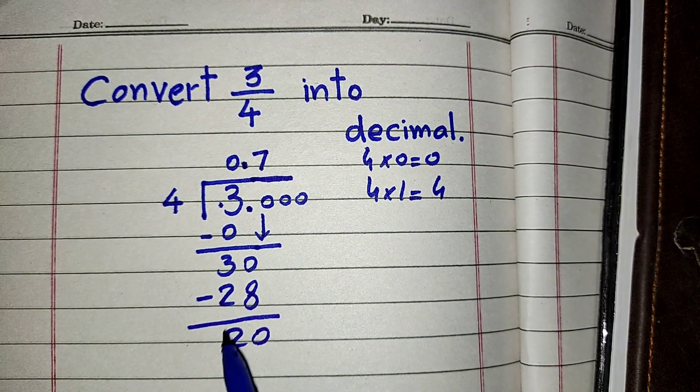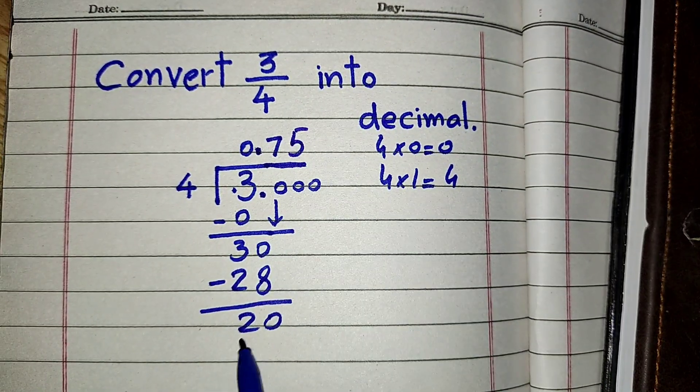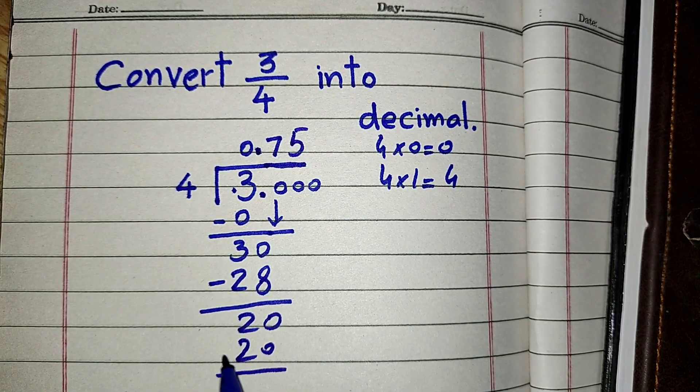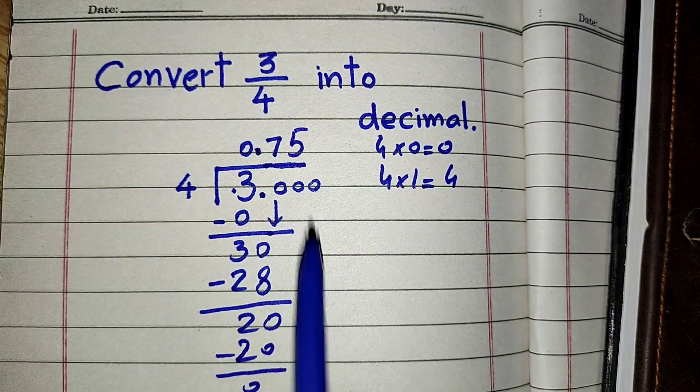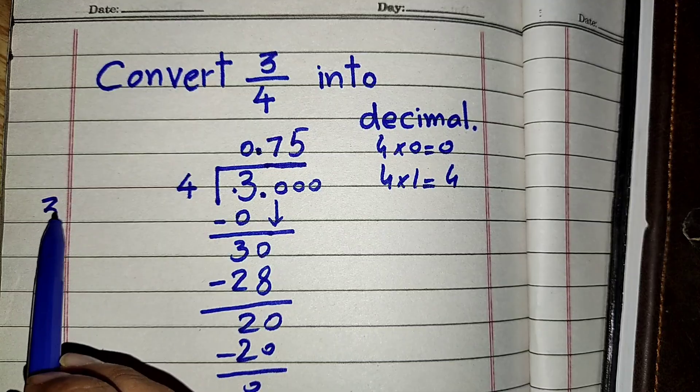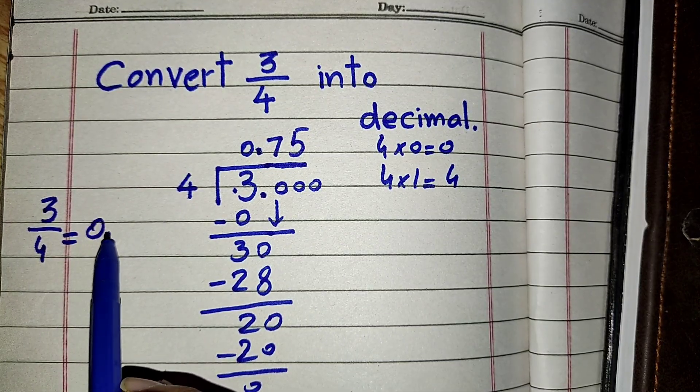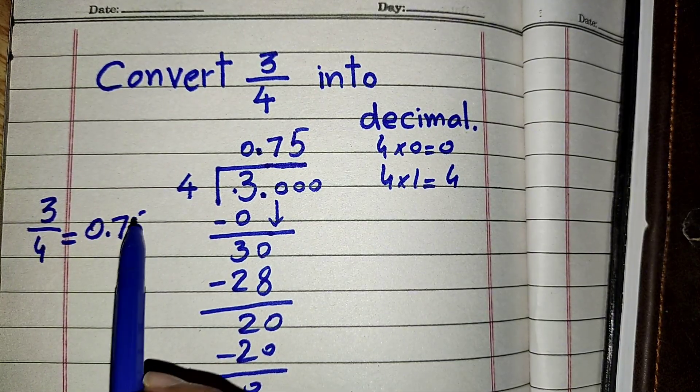We can write that 4 times 5 is 20, so our final answer is 0.75. That is the decimal form of this fraction. We can write finally that 3 upon 4 in fraction form is equal to 0.75.